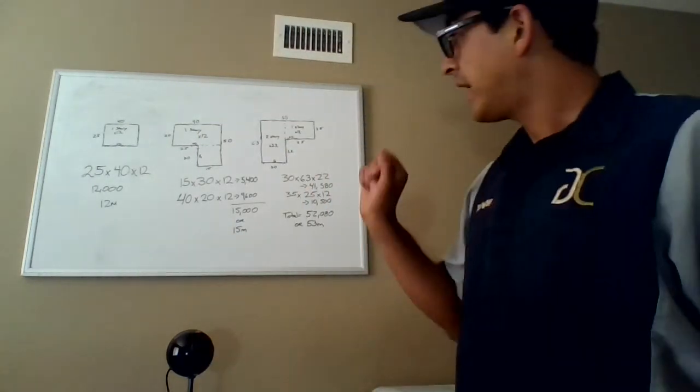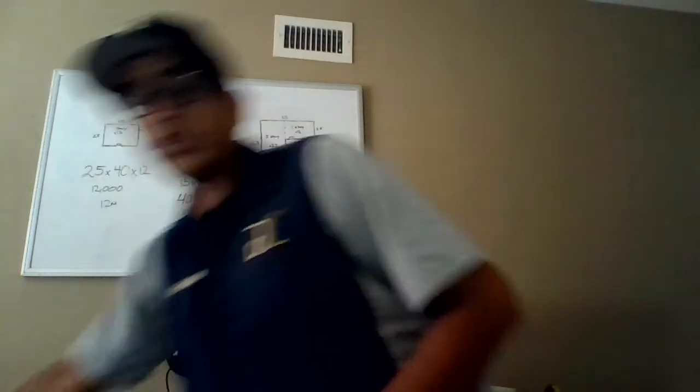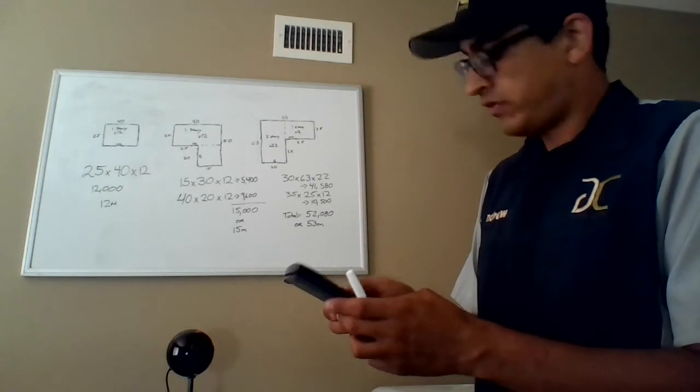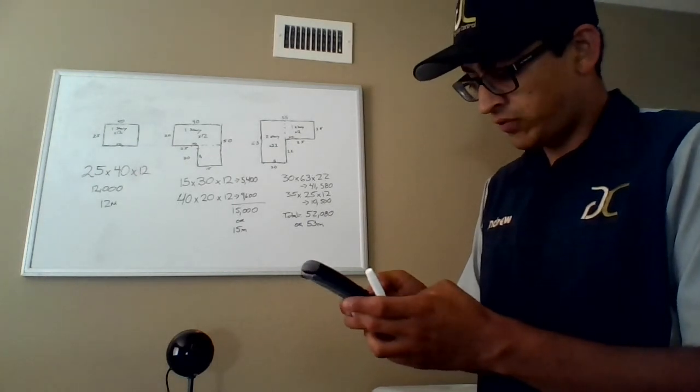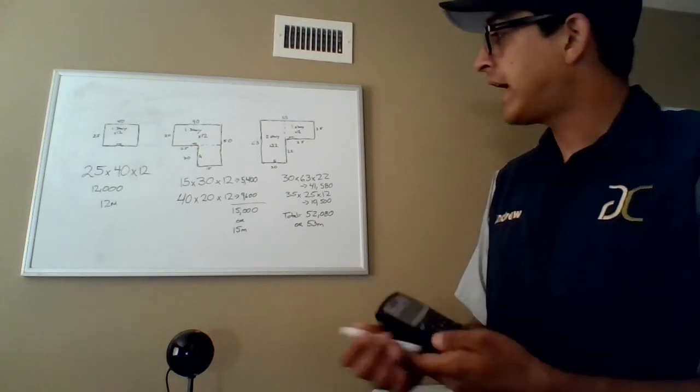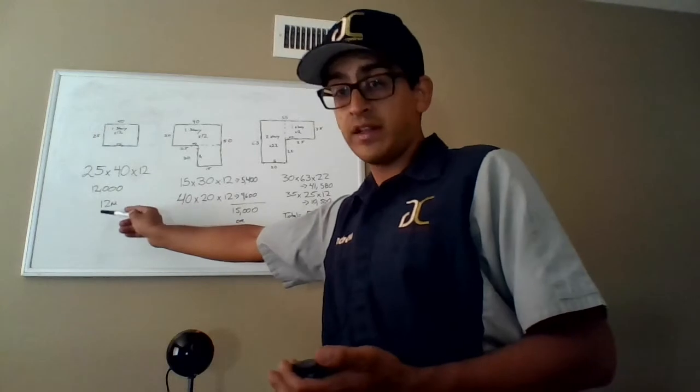So again, if we were to get the volume for a property like that, let me just run the number really quick. So 25 by 40 by 16, you would be looking at 16,000 or 16 M instead of the 12 M.